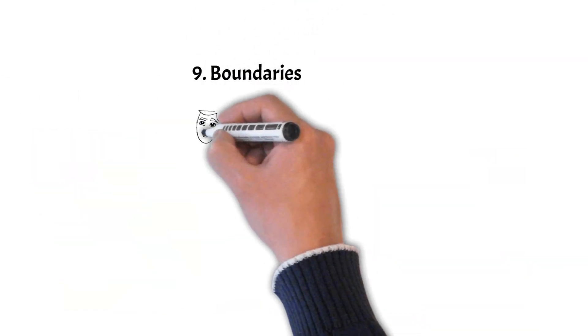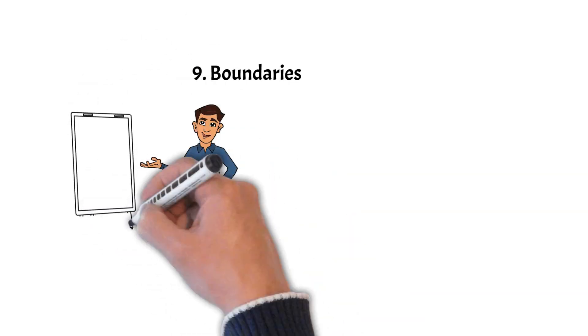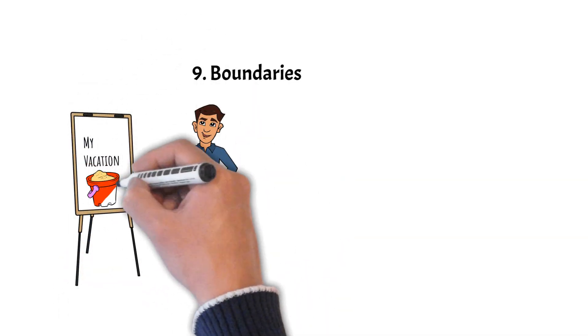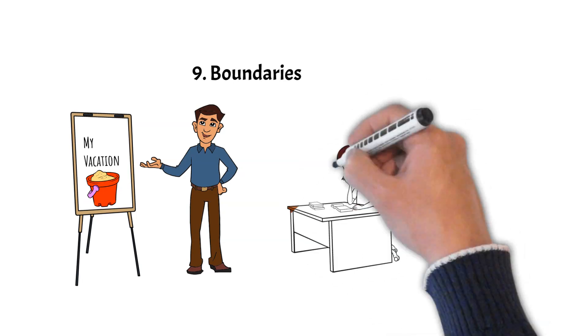9. Difficulty with Boundaries. Their zest for life and wider range of interests can sometimes lead them to overstep boundaries, either in terms of their own limits or those set by others.